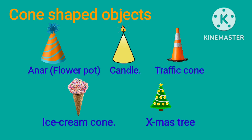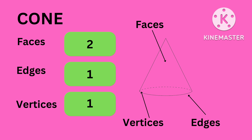Cone-shaped objects: look at the shapes of objects below. All these objects have the shape of a cone — funnel, flower pot, candle, traffic cone, ice cream cone, Christmas tree. The cone has two faces, one edge, and one vertex or corner.